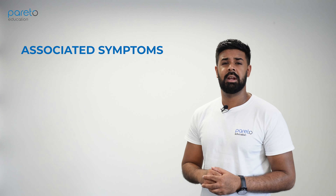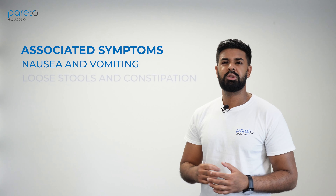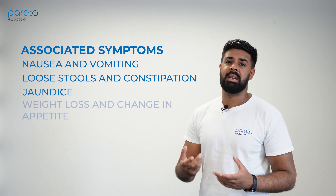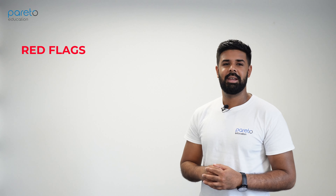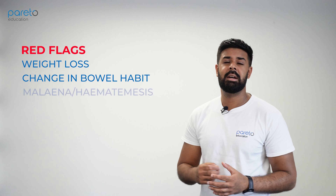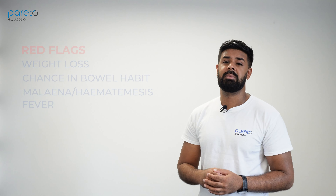In pain histories you can always use the SOCRATES framework, which is quite helpful when there are so many things to consider. Associated symptoms to ask about include nausea and vomiting, loose stools, constipation, jaundice, and changes in eating habits. Red flags in any abdominal history include weight loss, change in bowel habit such as melaena or blood, and fever, which can even indicate cholangitis. Let's see an abdominal history in action.